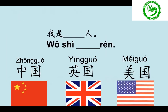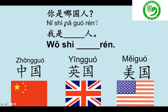Now we've learned 我是中国人, 我是英国人, 我是美国人. Then how to ask the question 'Where are you from?' or 'What is your nationality?' It is 你是哪国人? Listen, 听. If I translate character by character, it is 'You are which country person?' which means 'Where are you from?' One more time, follow me: 你是哪国人?